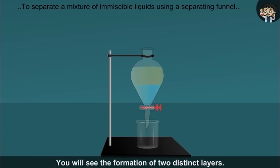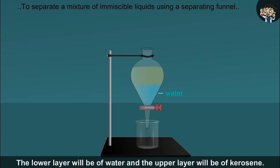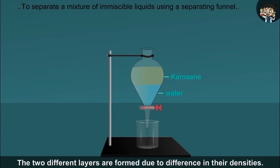You will see the formation of two distinct layers. The lower layer will be of water and the upper layer will be of kerosene. The two different layers are formed due to difference in their densities.